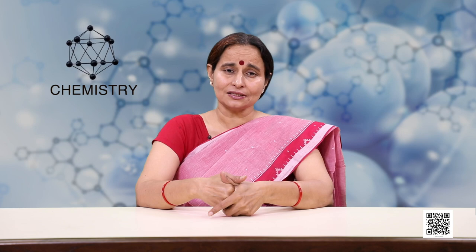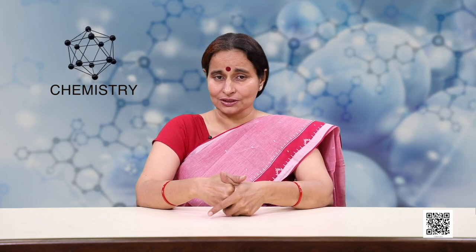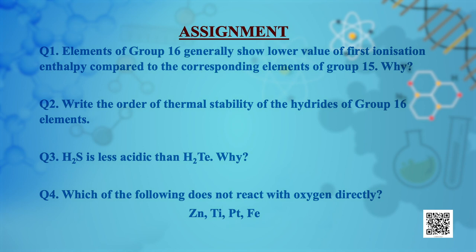Before we end, here are some assignment questions. Question 1: Elements of group 16 generally show lower values of first ionization enthalpy compared to the corresponding elements of group 15 — why? Question 2: Write the order of thermal stability of hydrides of group 16 elements. Question 3: Hydrogen sulphide is less acidic than hydrogen telluride — why? Question 4: Which of the following does not react with oxygen directly — zinc, titanium, platinum or iron?